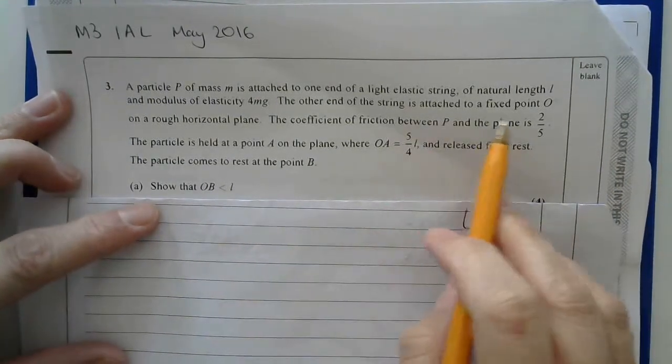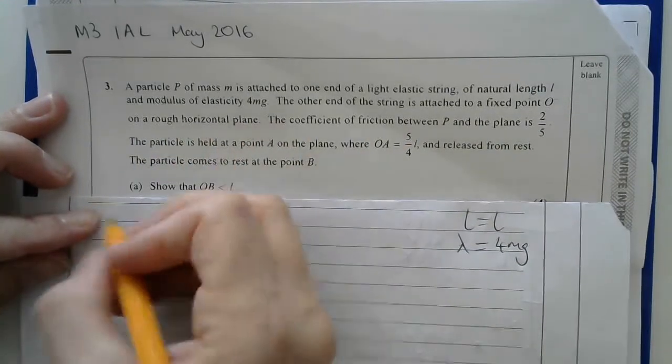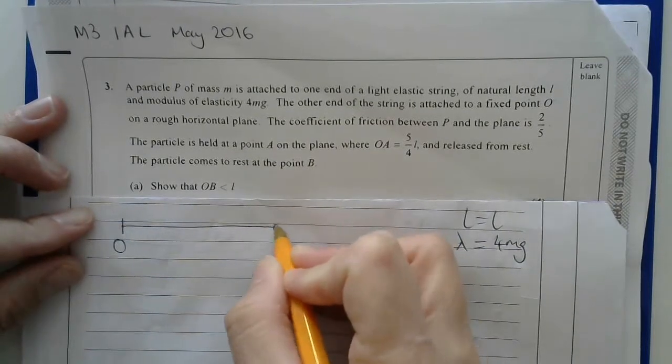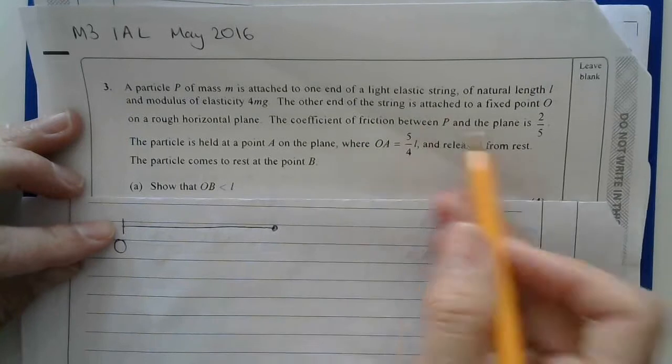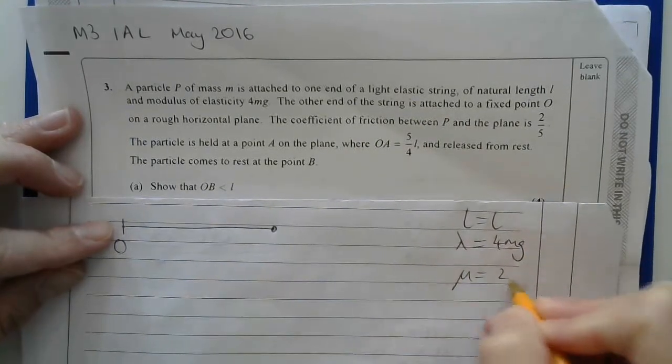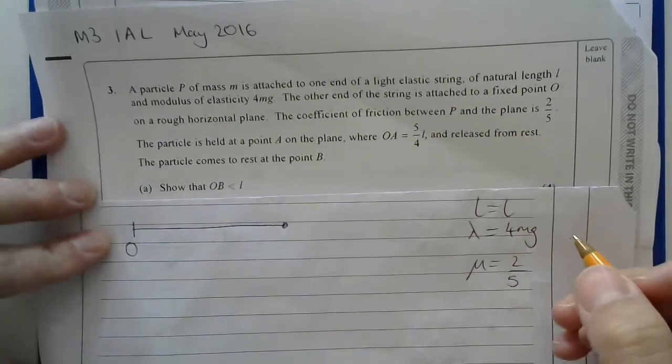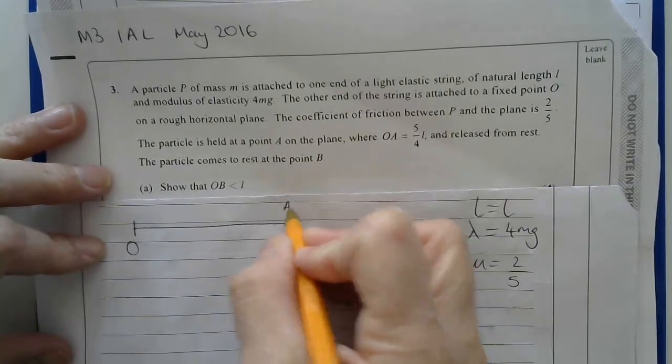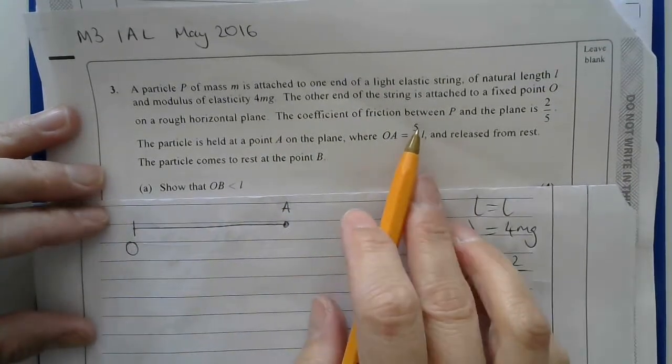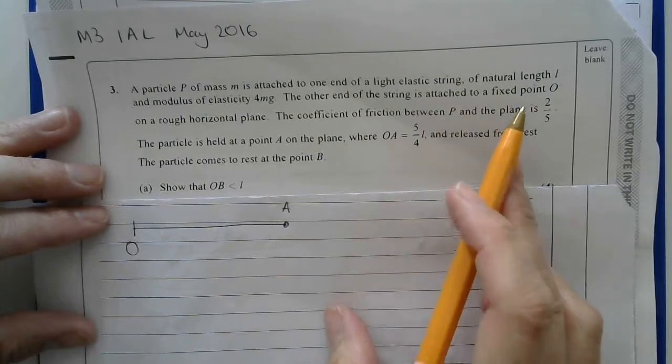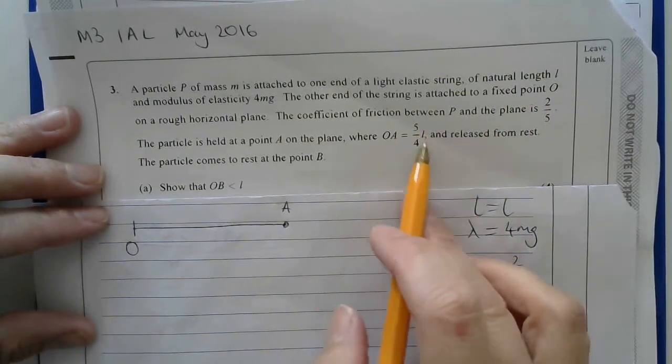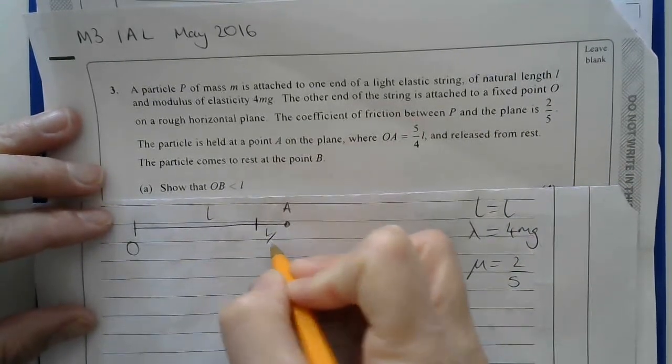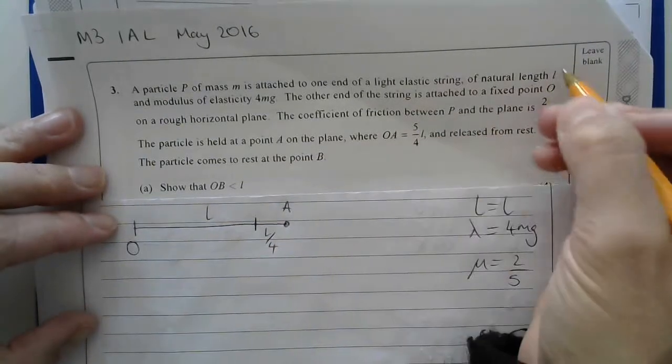The other end of the string is attached to a fixed point O on a rough horizontal plane, rough meaning friction. Here I've got O, and then the particle attached to the other end of the string somewhere. The coefficient of friction between P and the plane is 2 fifths, so mu is 2 fifths. The particle is held at a point A on the plane, where OA is 5 over 4L. If the natural length is L and it's held here, then this is longer than L by L over 4.